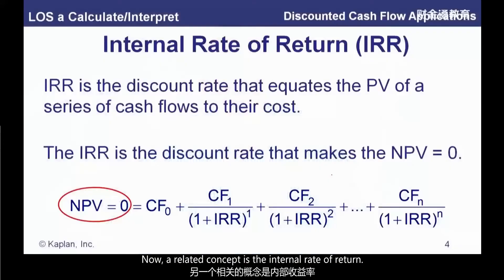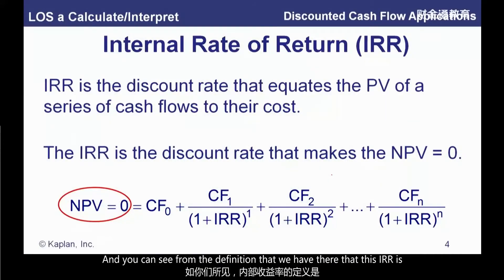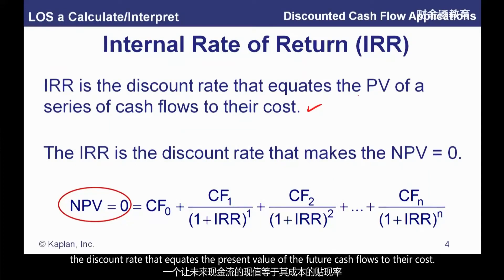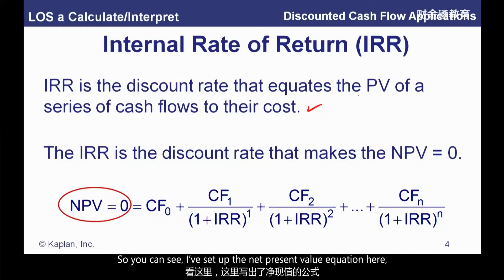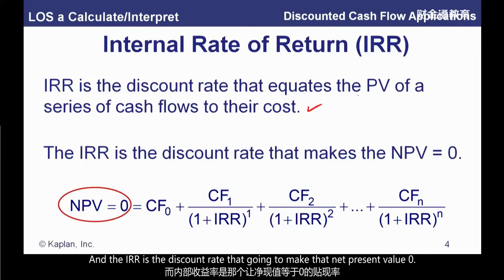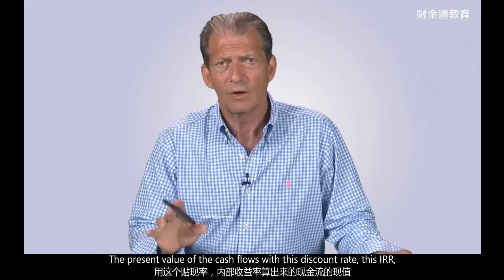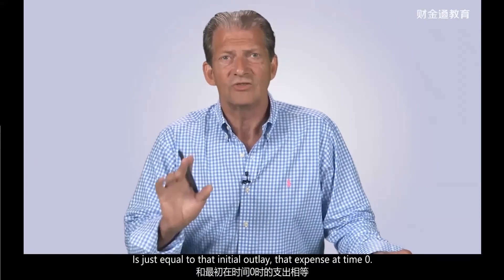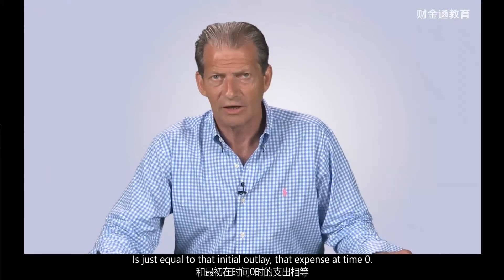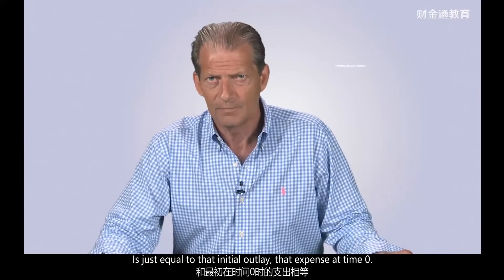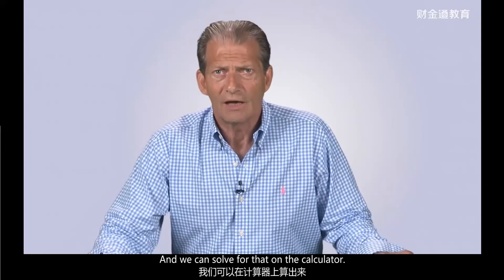A related concept is the internal rate of return. The IRR is the discount rate that equates the present value of a series of cash flows to their cost. I've set up the net present value equation here, and the IRR is the discount rate that's going to make that net present value zero. That also means that the present value of the cash flows at this discount rate — this IRR — is just equal to that initial outlay, that expense at time zero. We can solve for that on the calculator.